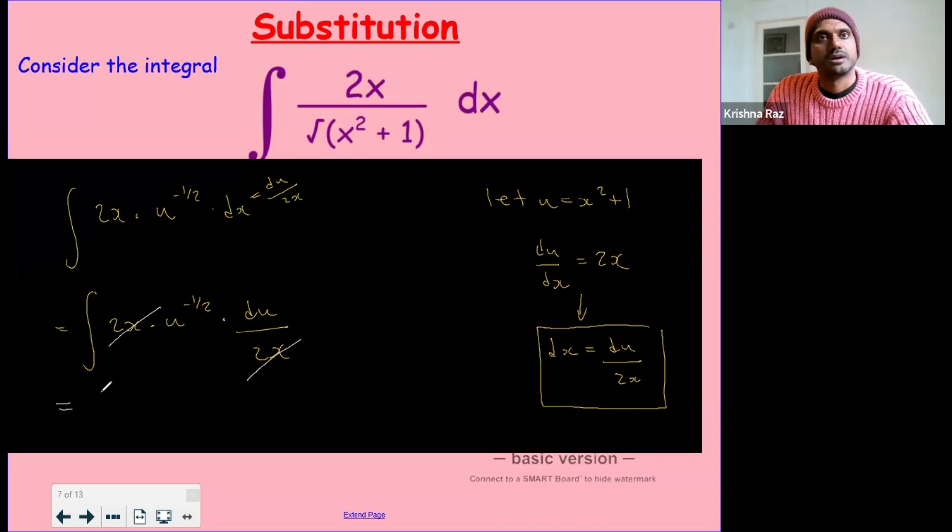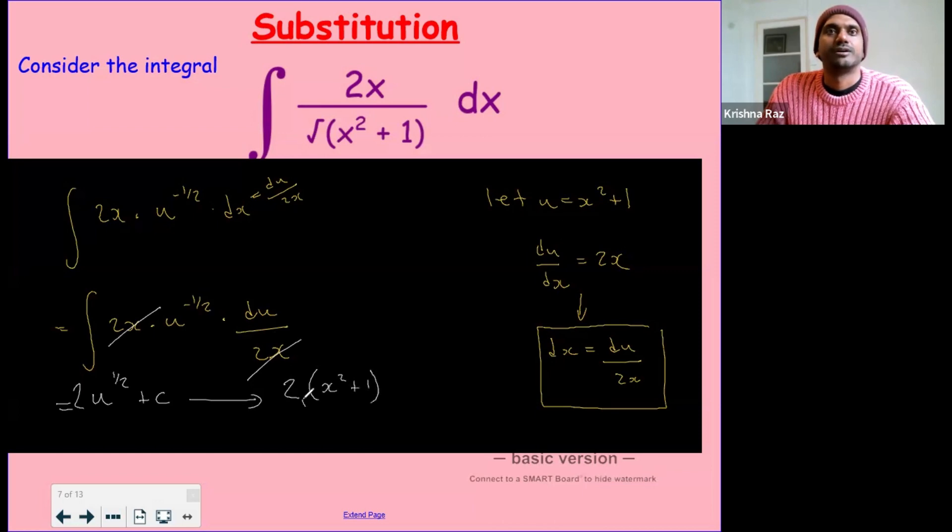The integral of u to the minus a half is u to the half divided by a half, which is the same as times u by 2. And since u is equal to x squared plus 1, the answer will be 2x squared plus 1 all to the power of a half plus c.